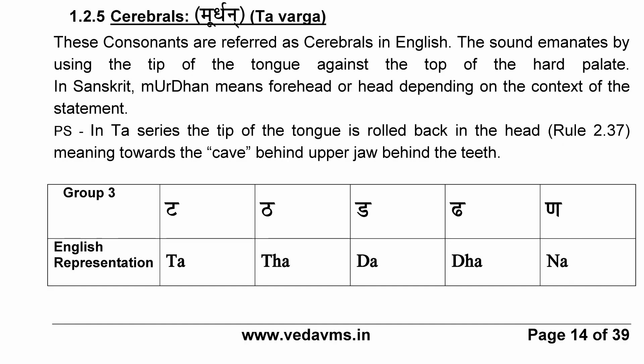What is the nasal of the Ta-Varga? It is Na, as you say in Narayana. When you say Na, the air is pushed up. Therefore, Na comes from reasonably the front portion but is pushed up, and therefore it is the nasal of the class called Moordhan, or head.